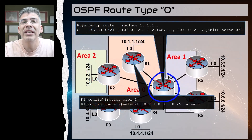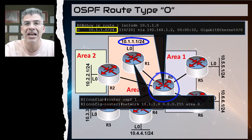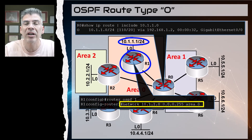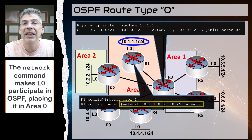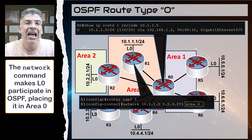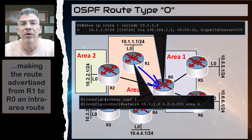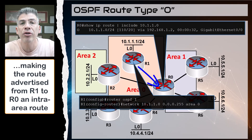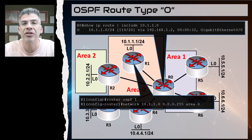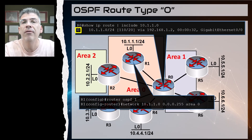In R0 we see the route to the 10.1.1.0/24 network, which is learned from R1. In R1 we see that the loopback interface's network is included in the OSPF network command, which automatically places the loopback interface within area 0. So the route advertised from R1 to R0 is an intra-area route — a standard OSPF route that comes from the same area in which R0 exists. That's why we see the O code for this entry.